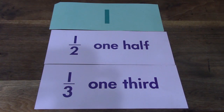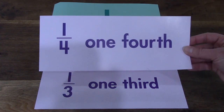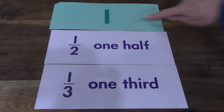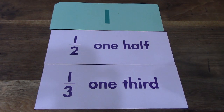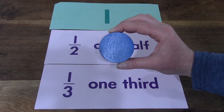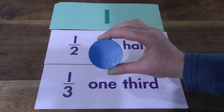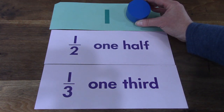Hi class! Do you notice something? I took out my one-fourth card and replaced it with one that says one. I have a shape here — it's a circle. Is this one circle?